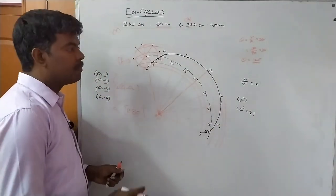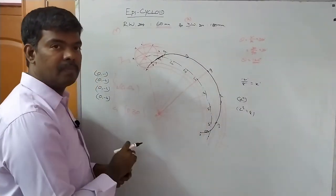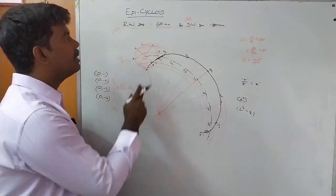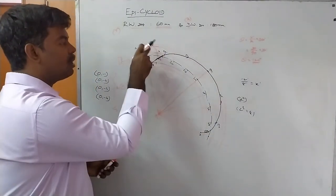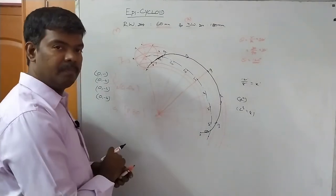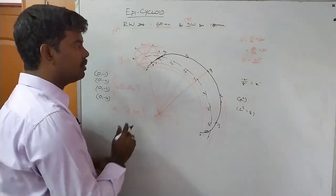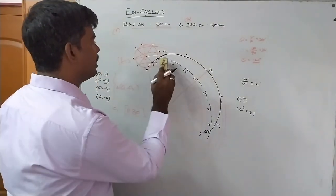This is the epicycloid curve, generated because the rolling wheel rolls on the outside of another wheel.